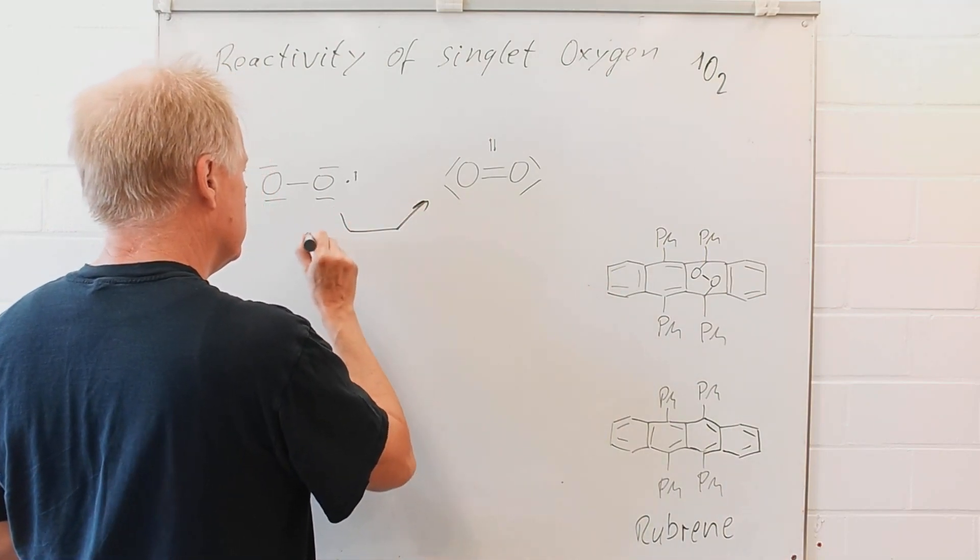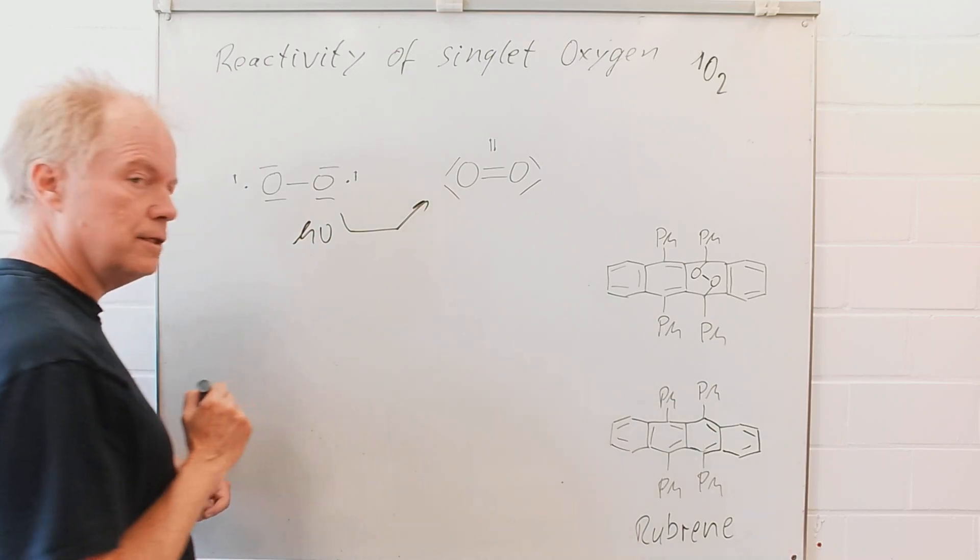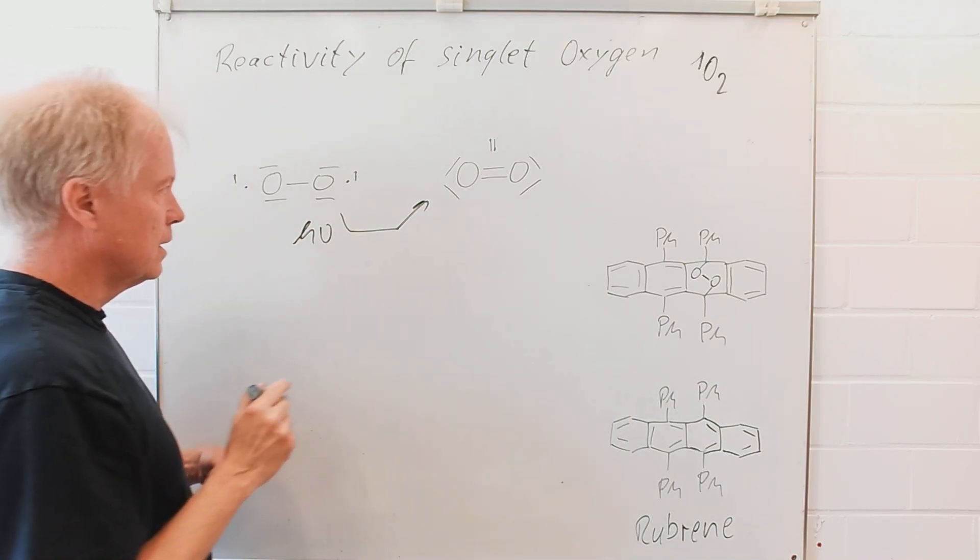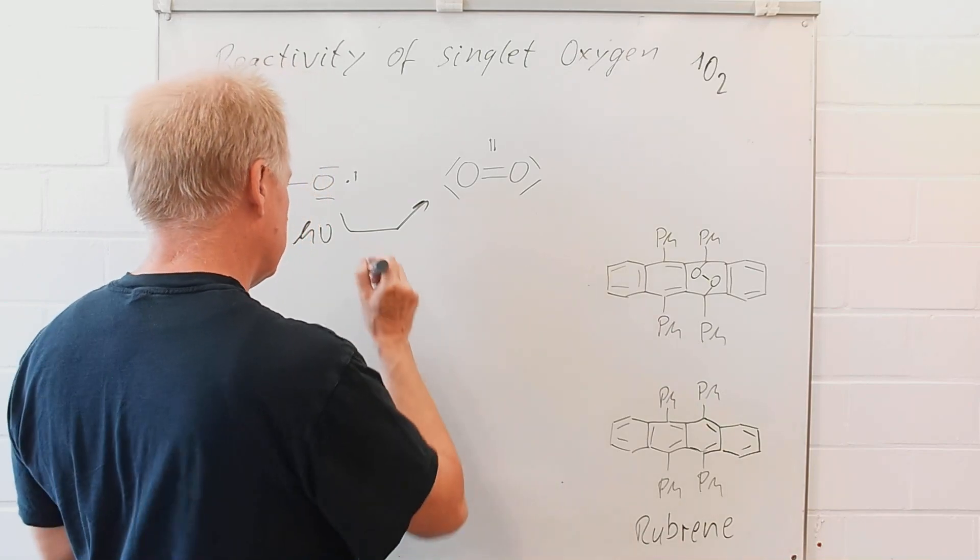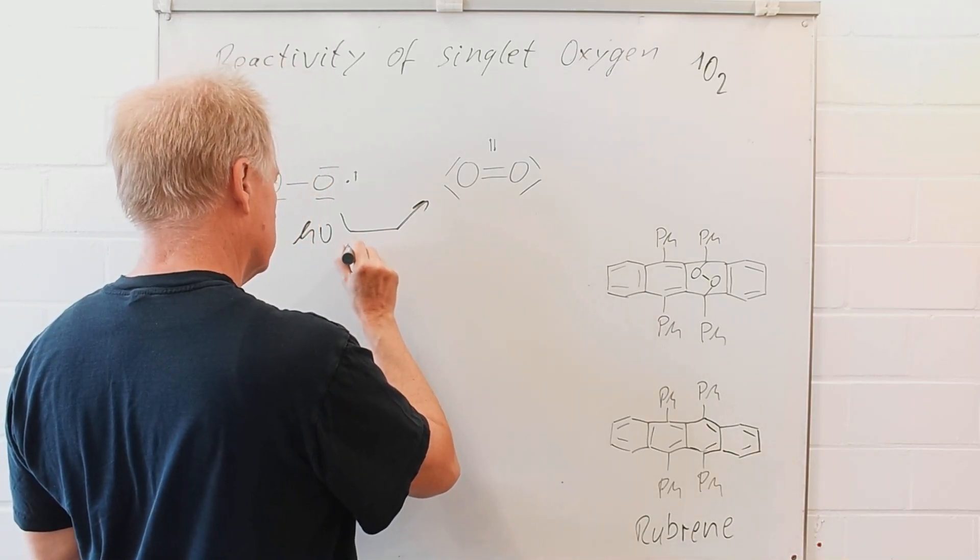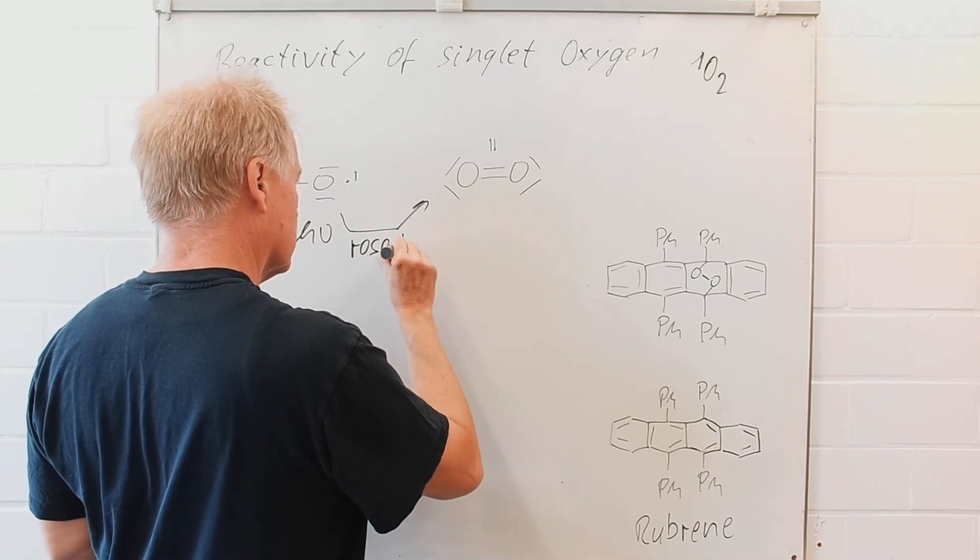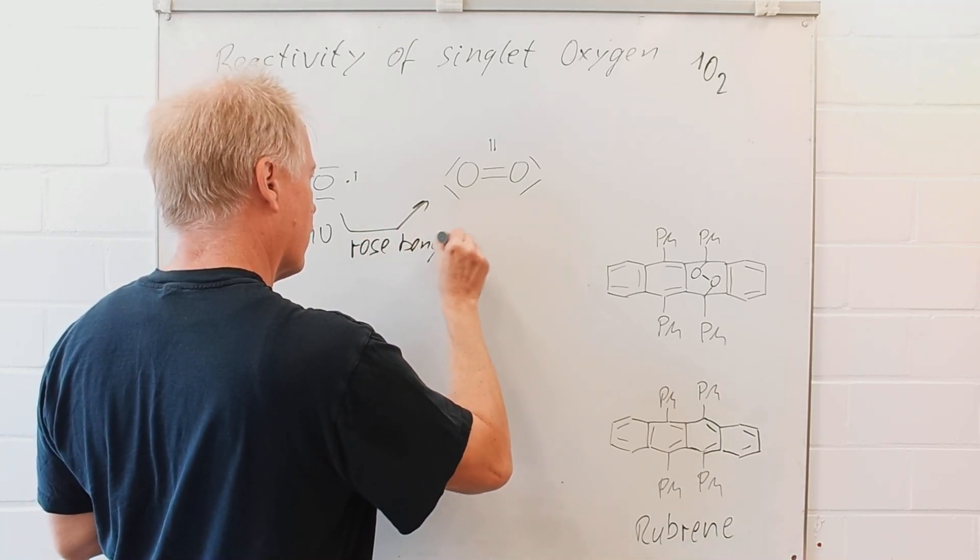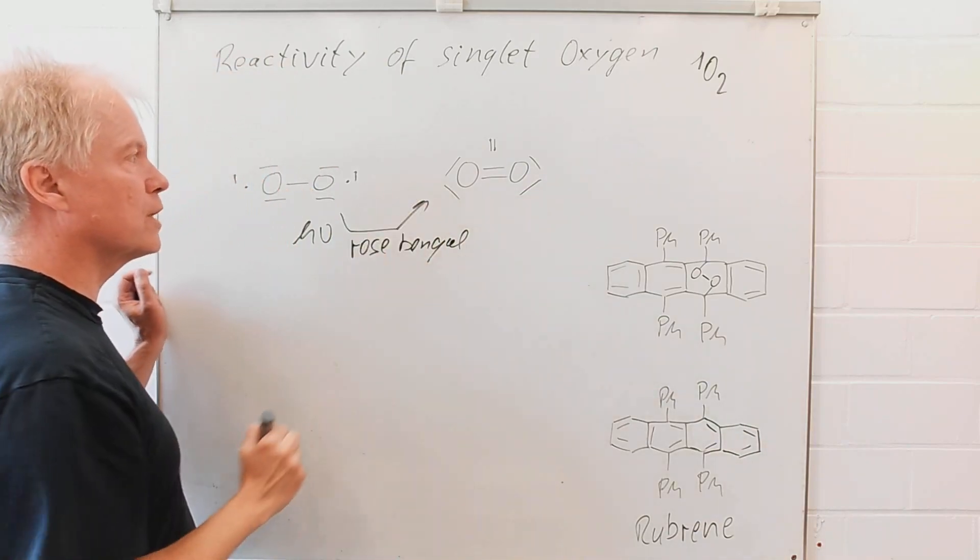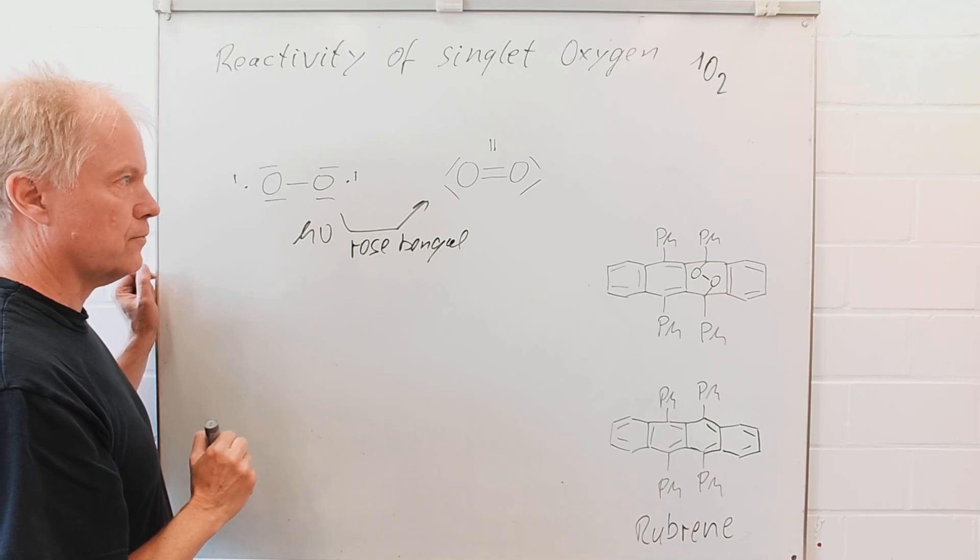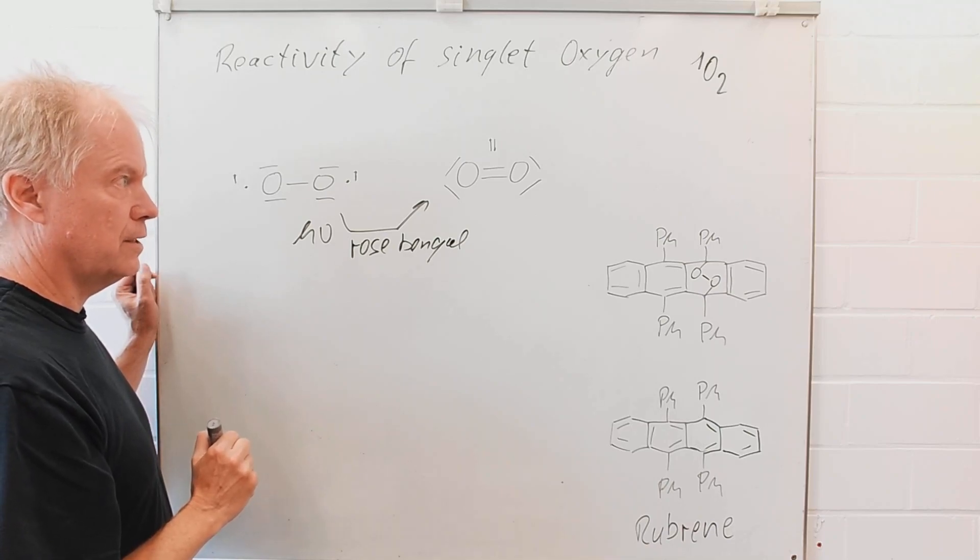You need, of course, light and a sensitizer, for instance, Rose Bengal. And then you can photochemically generate singlet oxygen.